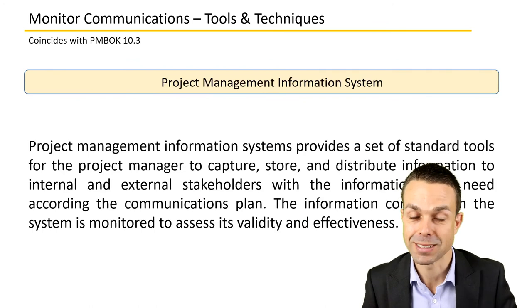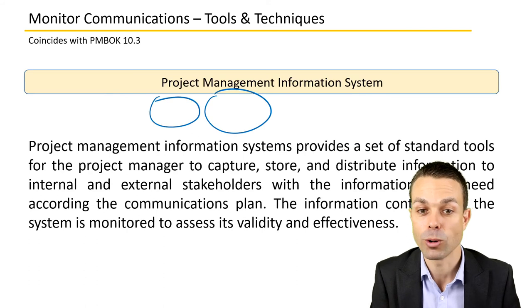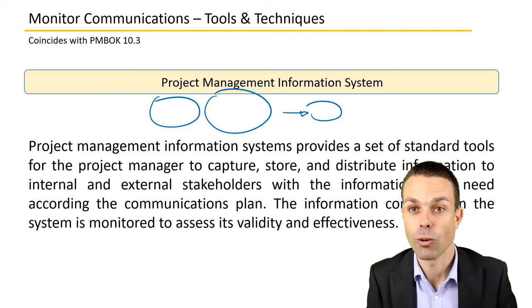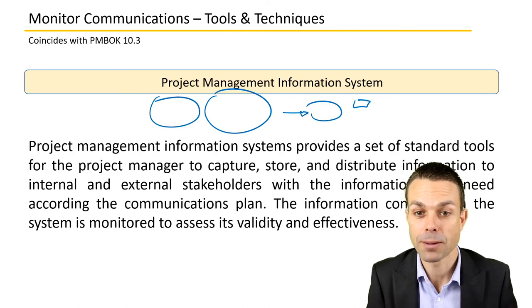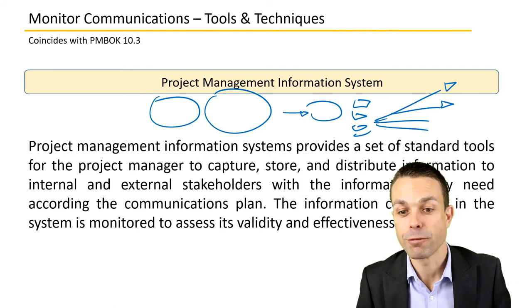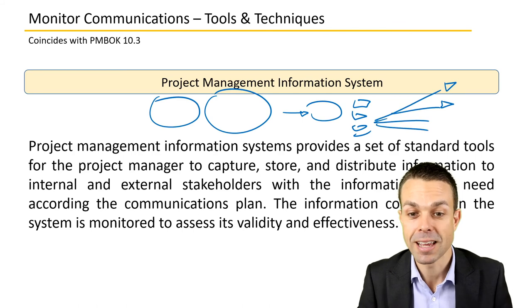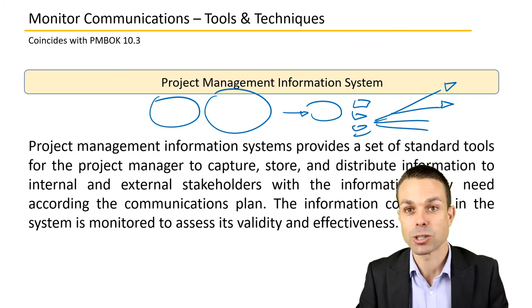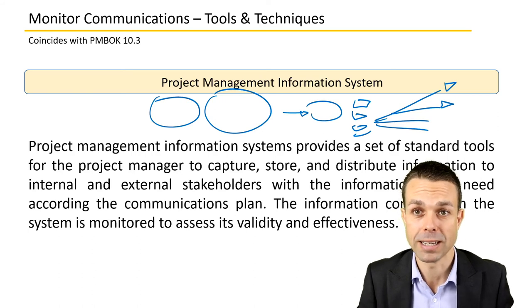The project management information system itself may be a few different things — the process we use for gathering information about our project, how it's tracking, and how we disperse that to all relevant people. The information contained in this system is monitored to assess its validity and effectiveness, so we need to make sure that information is correct and still valid for what we need.